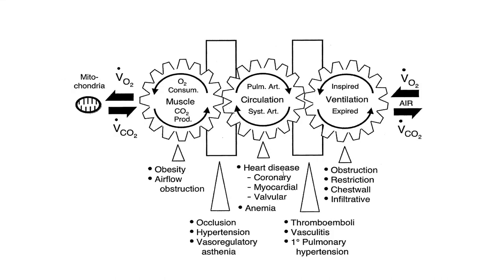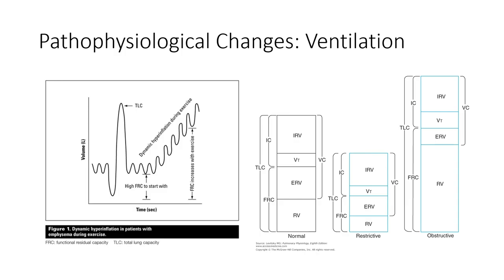Just going over some of the pathophysiological changes that can occur with ventilation. Going back to our whip-and-wax structure, if we've got impaired ventilation it's going to make these two systems have to work a little bit harder. So if we can improve this, we can ultimately potentially improve our ability to exercise and move around and do the things we want to do.